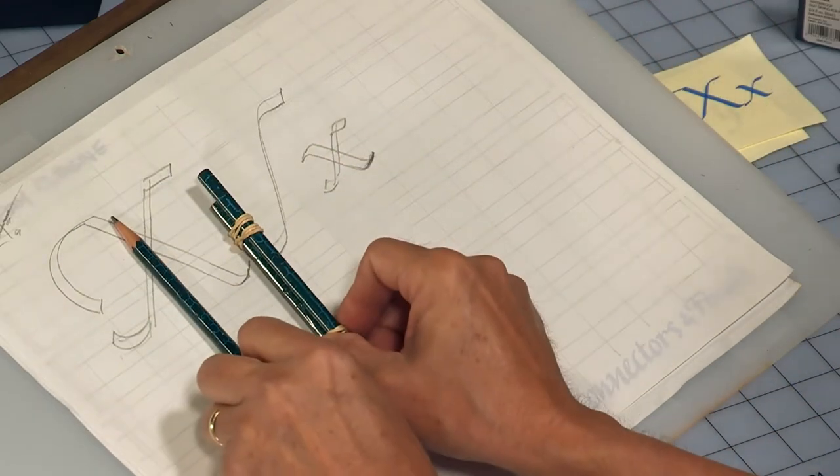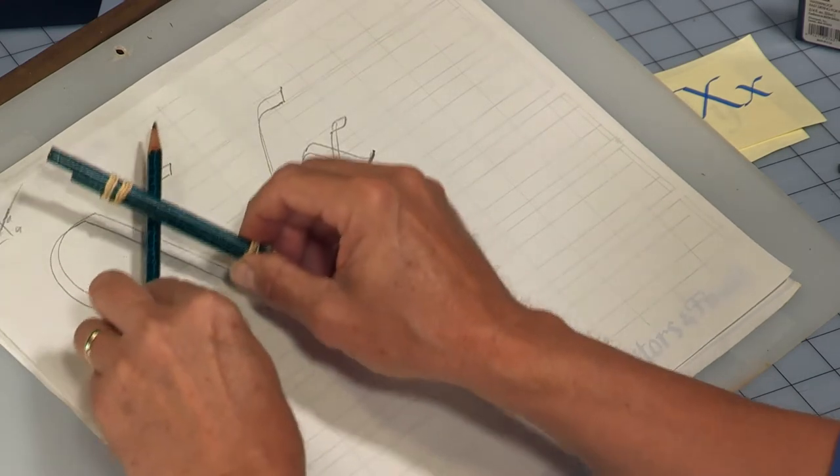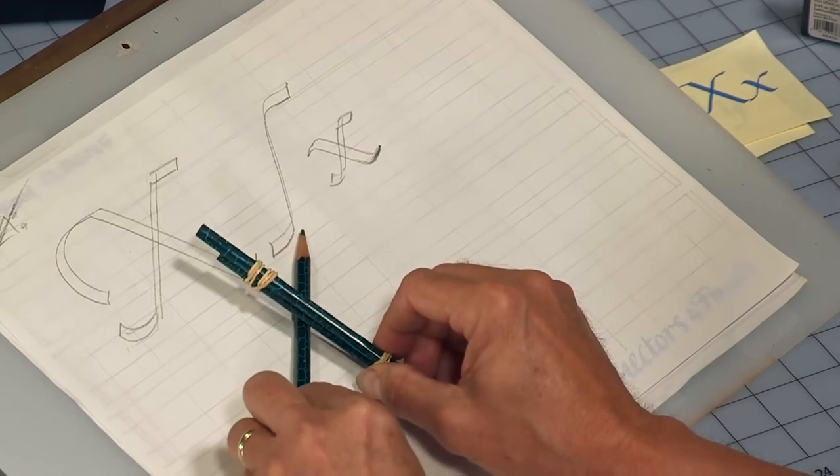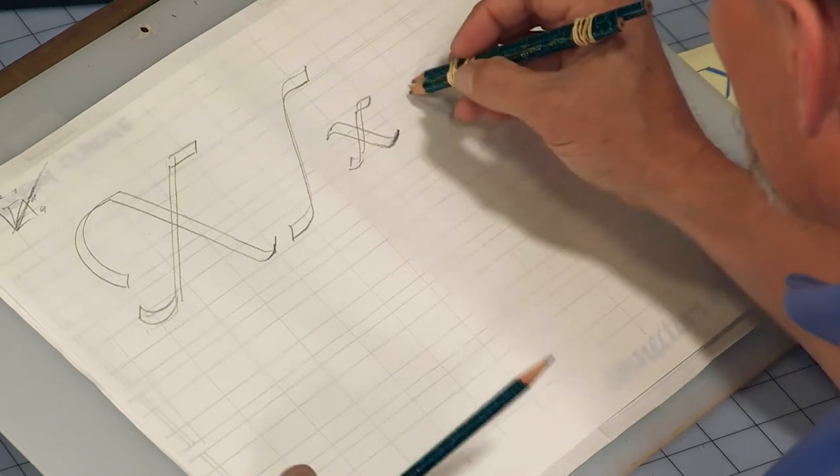So the challenge in an X, like in all the slant letters, there are no lines that go parallel to the italic guidelines. So you have to create an X that looks as though it's leaning, and that just comes with practice.